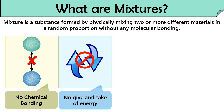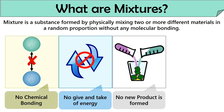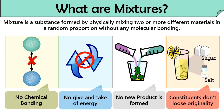No give and take of energy takes place. In mixtures, neither old chemical bonds break nor new ones are formed. Thus, there is no involvement of energy between the components. No new product is formed as mixtures lack chemical interaction, so there is no chance of formation of any new substance. The properties of components present in the mixture do not change while the mixture is forming.